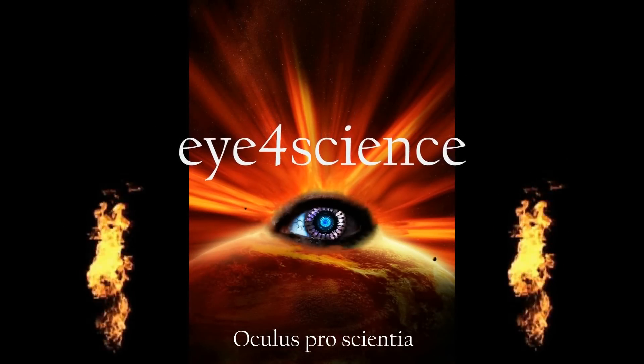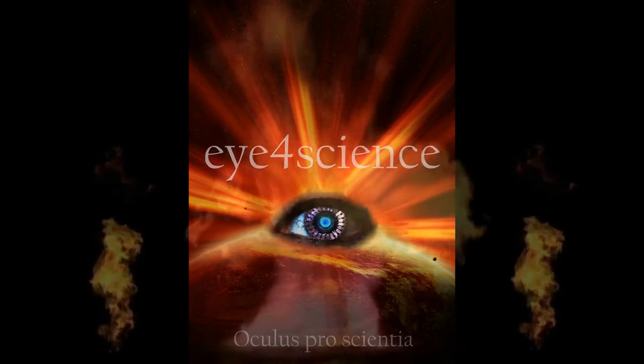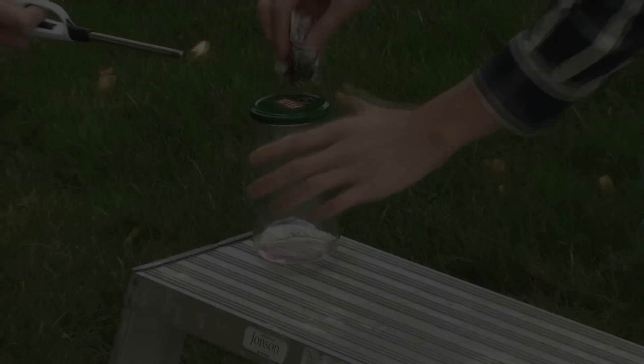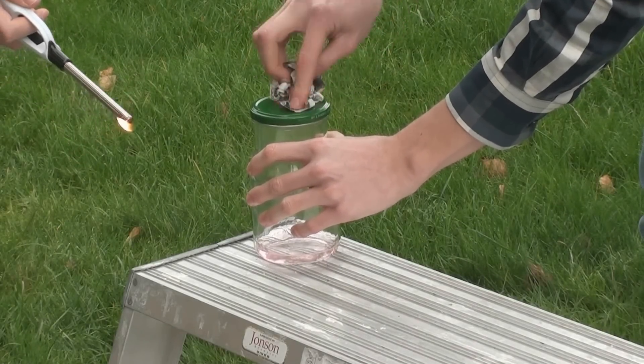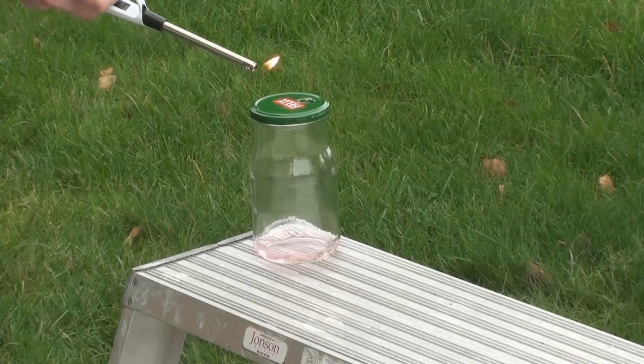Welcome to Eye4Science. Hey guys, in this episode we're gonna make our own jet engine prototype using a jam jar with a hole in the lid and some methylated spirit.